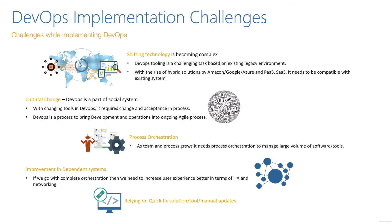The challenges of DevOps implementation: change is something we always resist, and shifting technology is becoming complex. DevOps tooling is a challenging task based on existing legacy environments, with the rise of hybrid cloud solutions like AWS, Azure, GCP, Alibaba Cloud, or Oracle Cloud — compatibility with existing systems is a problem. Cultural change is a human tendency. Process orchestration is what teams will have to progress on, and dependent systems need to become interdependent. These challenges are more on the human side than the technological side.